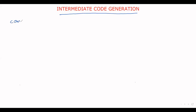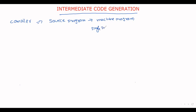Welcome to our channel. In this session we will discuss intermediate code generation. We already know the main task of a compiler is to convert the source program into machine program. But in some situations it is not possible to convert the source program directly into machine program in a single pass. In that situation, instead of directly converting, we generate an intermediate representation from the source program.